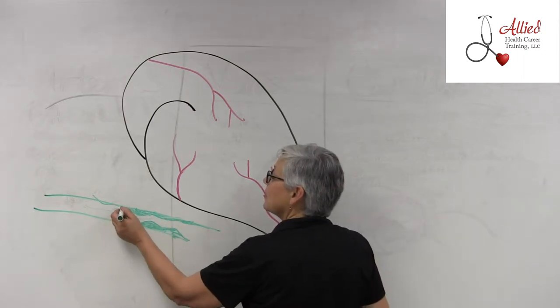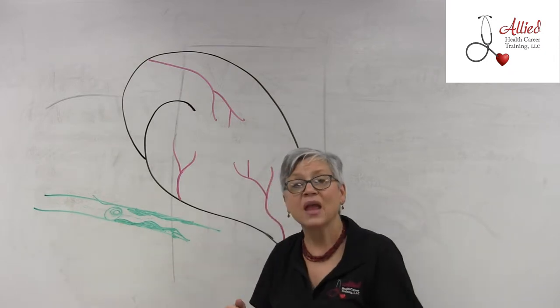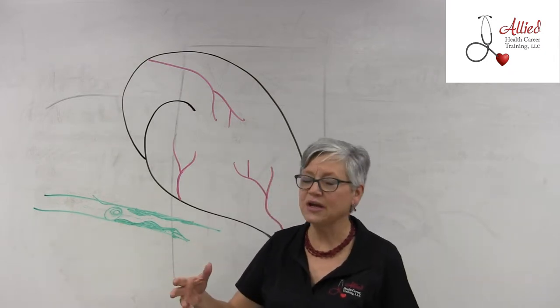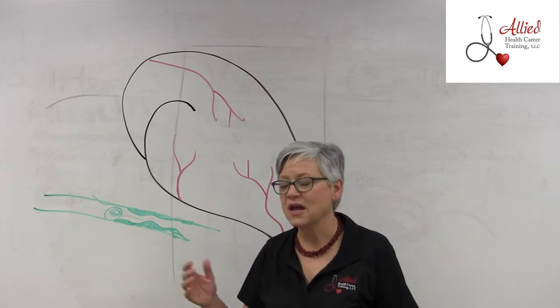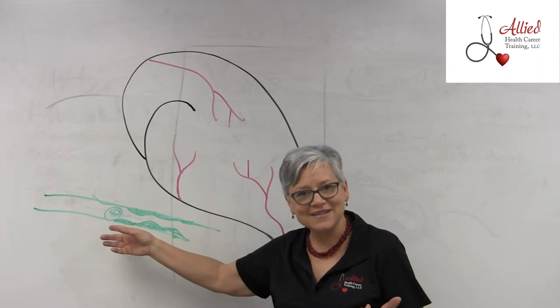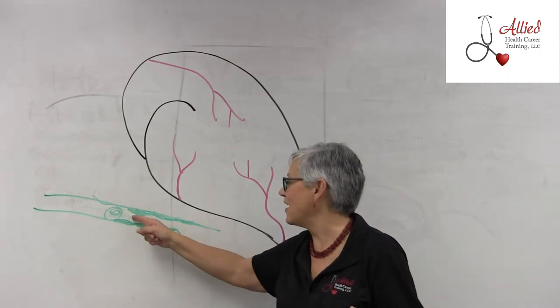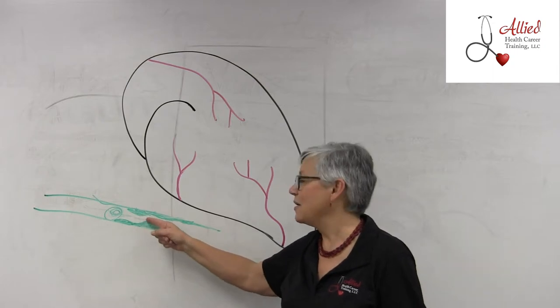So what happens when it gets into a narrowed place? The blood tends to swirl like that. Ever make a snowball? Of course you did, most of us. You start just with a little and it rolls and it gets bigger and bigger. That's how blood clots start.